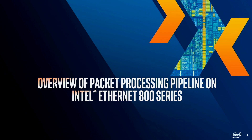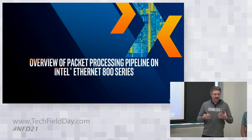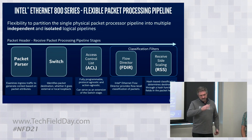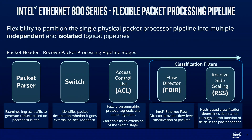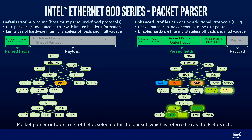I'm going to start with level-setting on what we refer to as a programmable pipeline and what capabilities we have with that. Our receive pipeline has several different stages, each kind of building on each other. The primary first one is the packet parser. When a packet comes in, it has to be analyzed — it creates what's called a field vector and fills out this table. The rest of the stages then use that information for switching, ACLs, and how to filter it through flow director or RSS.